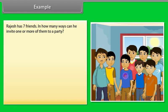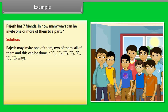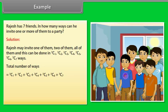Rajesh has 7 friends. In how many ways can he invite one or more of them to a party? Solution: Rajesh may invite one, two, or all of them, and this can be done in 7C1, 7C2, 7C3, 7C4, 7C5, 7C6, or 7C7 ways. Total number of ways equals 7C1 plus 7C2 plus 7C3 plus 7C4 plus 7C5 plus 7C6 plus 7C7, which equals 7 plus 21 plus 35 plus 35 plus 21 plus 7 plus 1, equals 127.